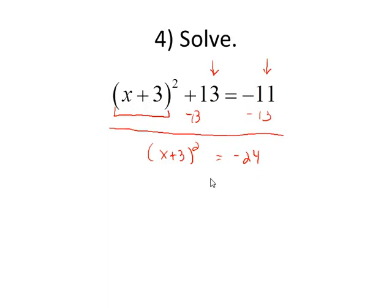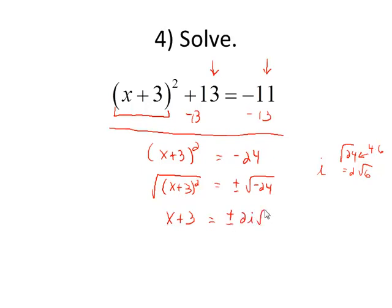Now, it looks just like the one we just did, right? Square root of both sides. The left side will simplify just to be x plus 3. And we want to work on the square root of negative 24. The negative sign tells me that I'm going to have an i as part of my solution. And then I want to work on the square root of 24. Well, the square root of 24 equals 2 square root of 6, because 24 is 4 times 6 and the square root of 4 is 2.